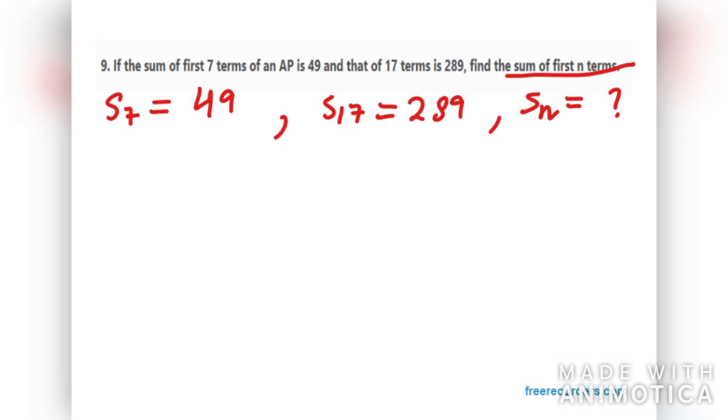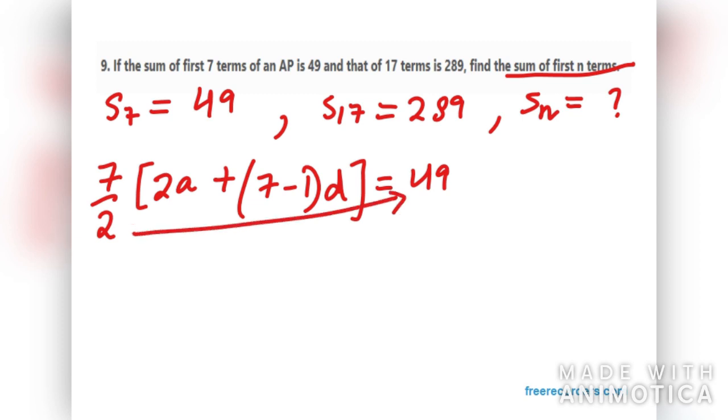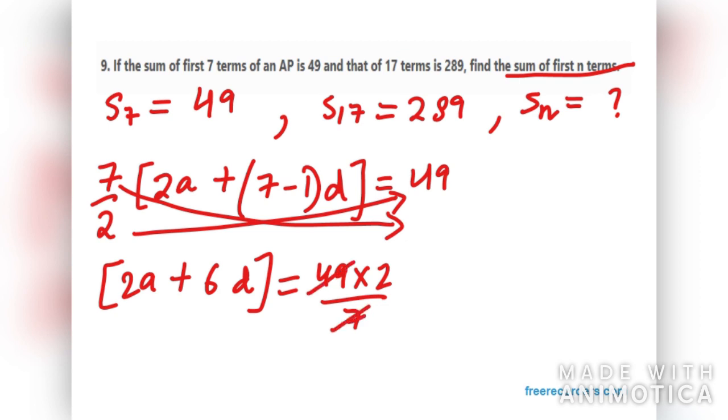Let's simplify S7. S7 can be written as 7 over 2, 2A plus 7 minus 1 D, equals 49. So 2 will go here and 7 will go here using cross multiplication. We have 2A plus 6D, 49 times 2 over 7. We can cut this down. So 2A plus 6D equals 14. This is the first equation.